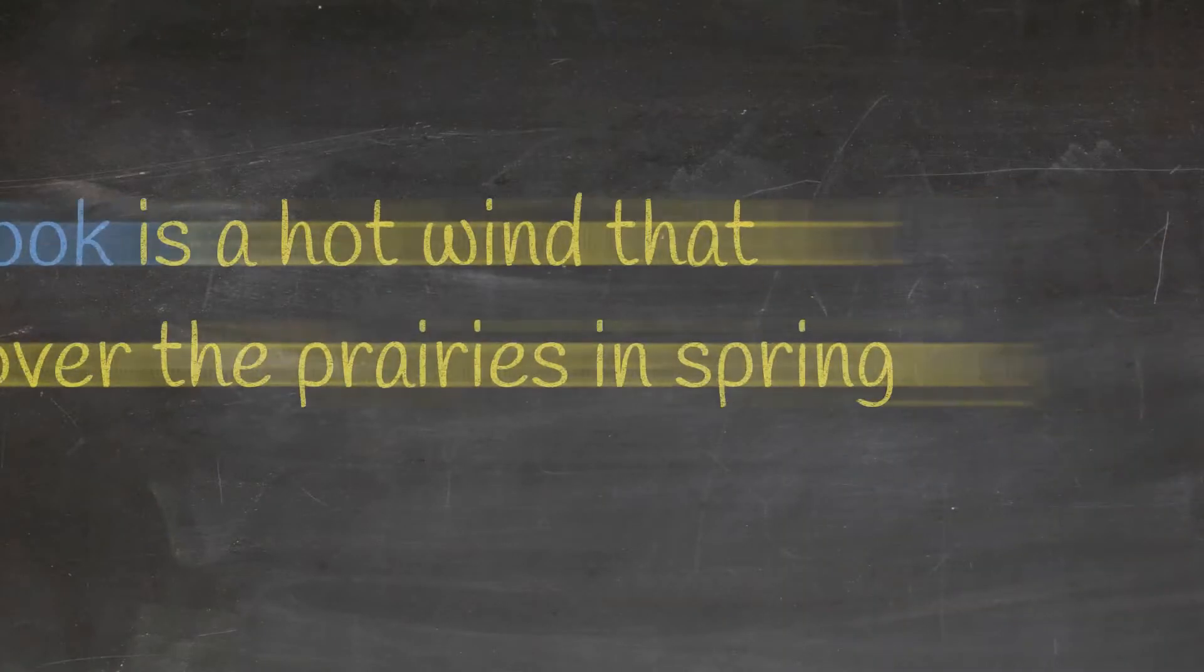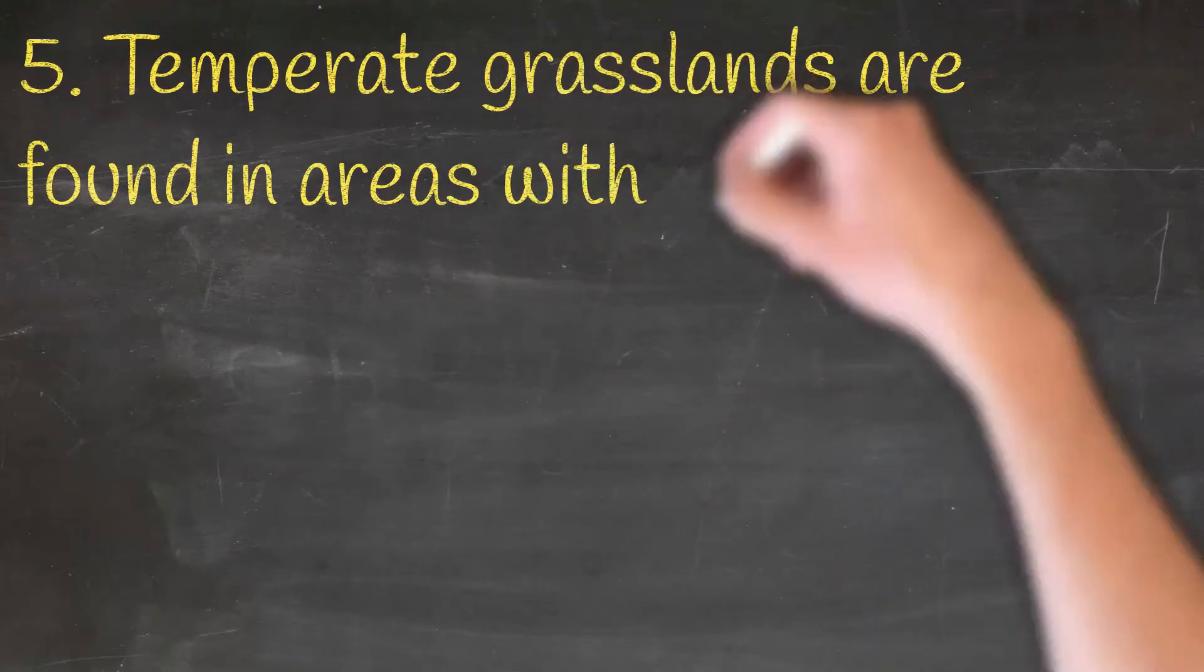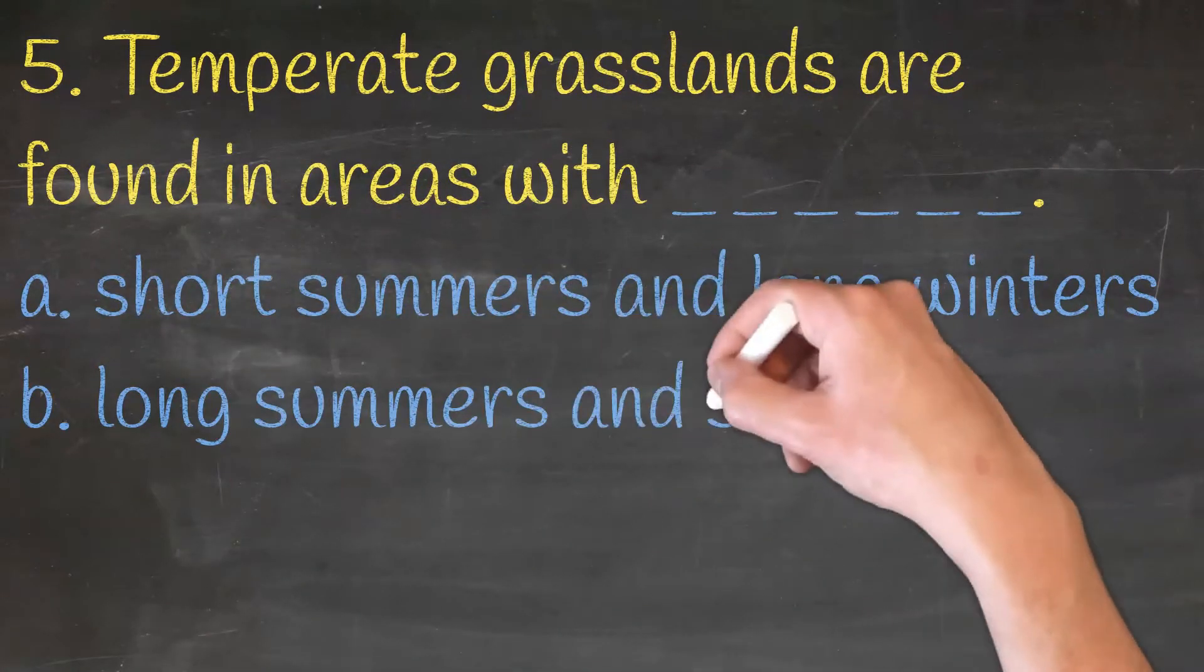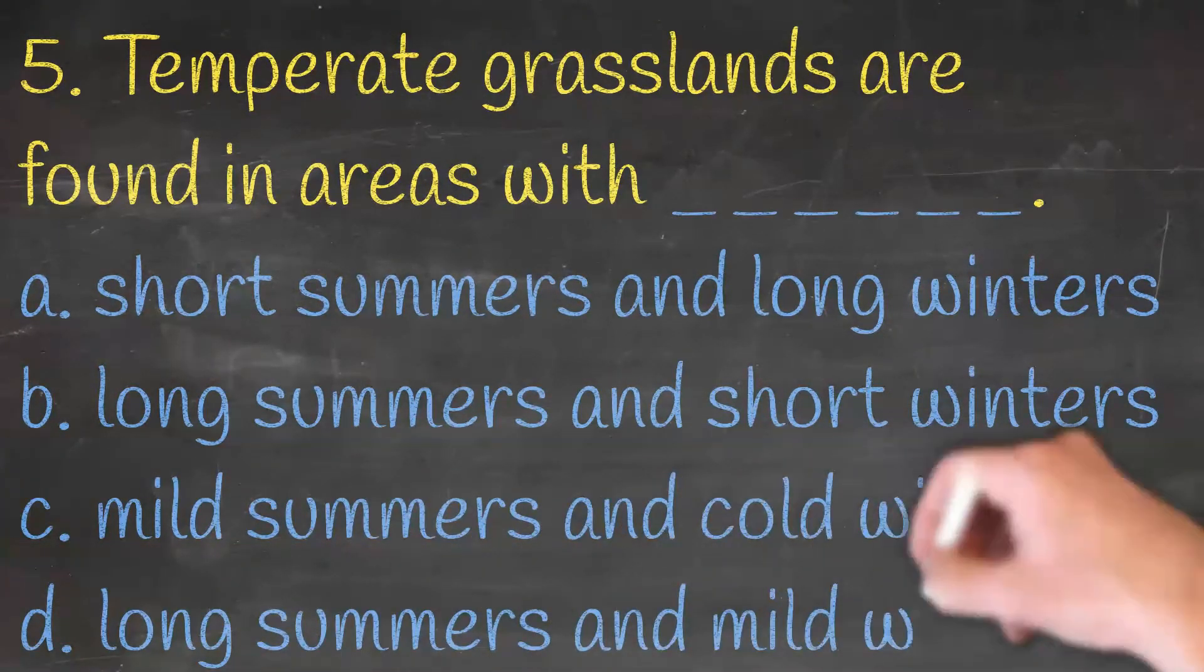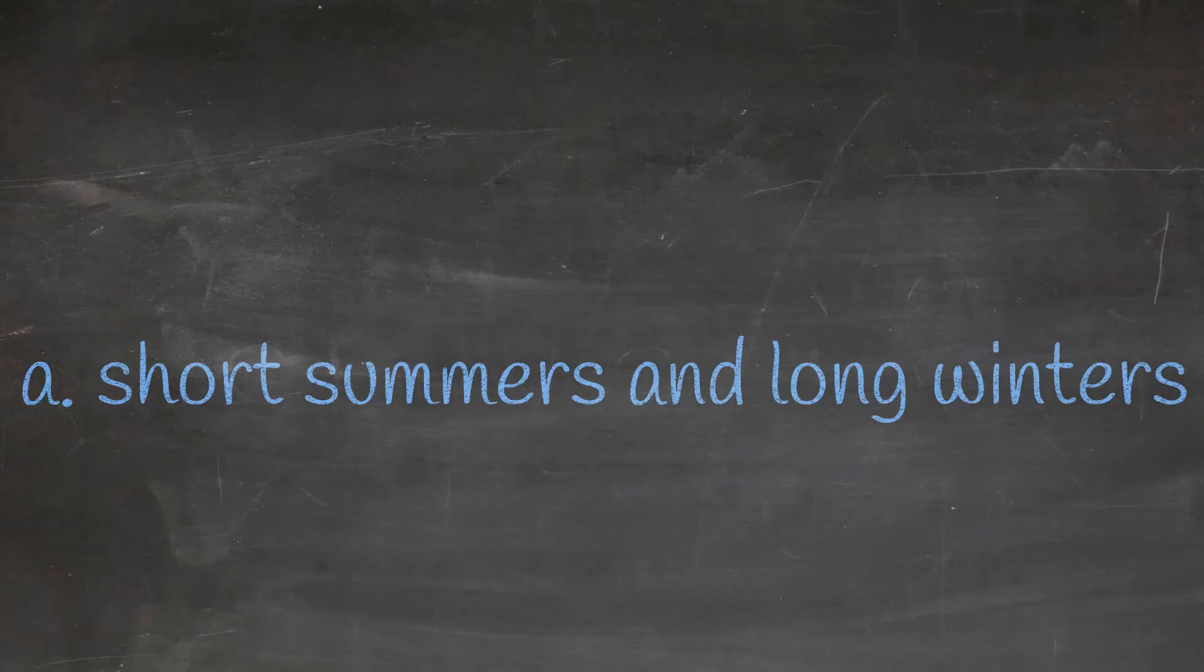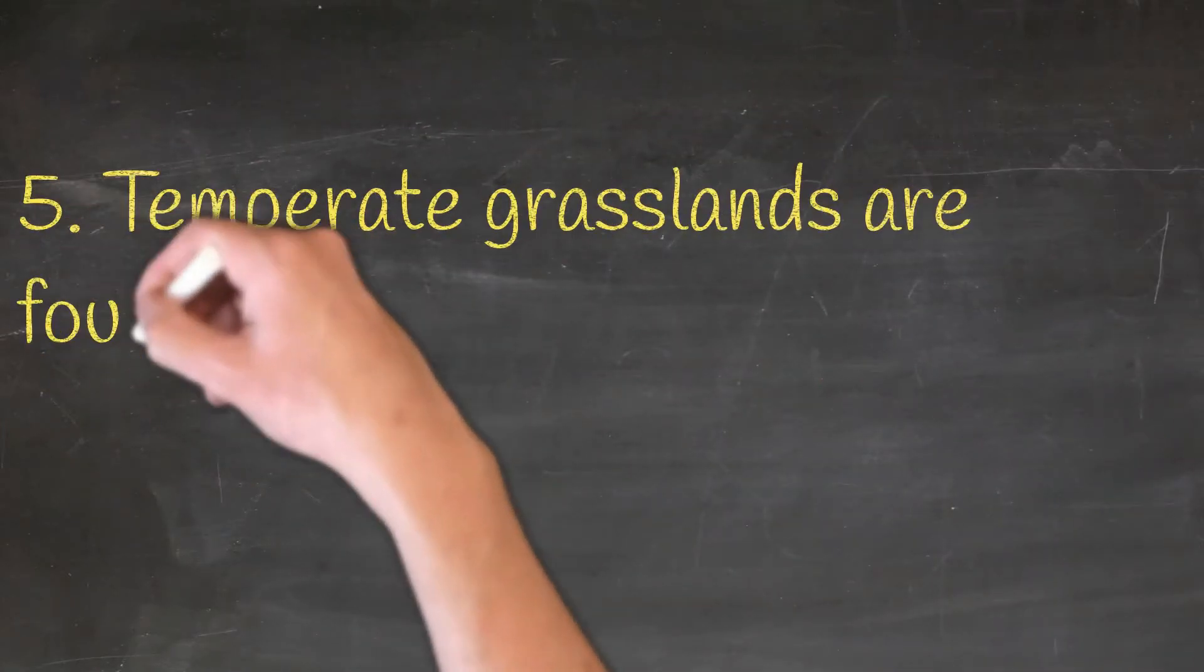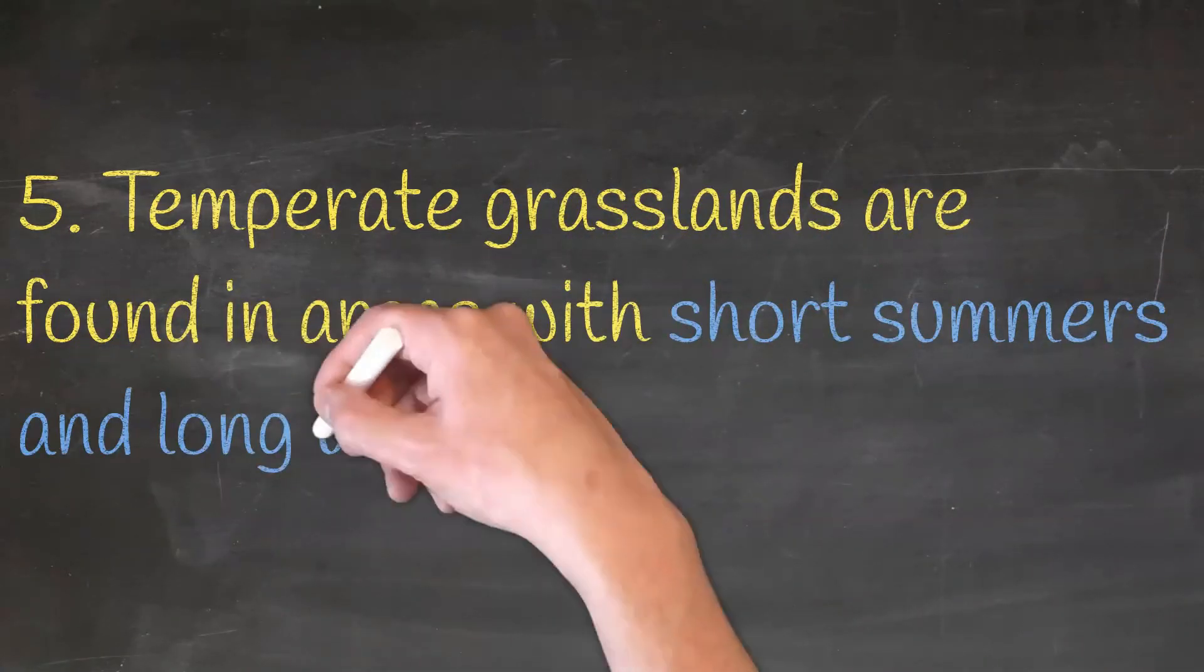Temperate grasslands are found in areas with dash, short summers and long winters, long summers and short winters, mild summers and cold winters or long summers and mild winters. And the correct answer is a, short summers and long winters. Temperate grasslands are found in areas with short summers and long winters.